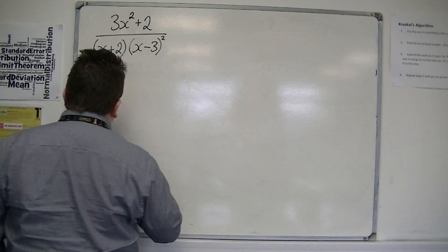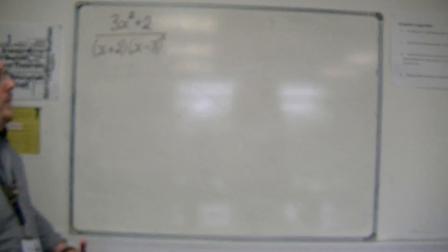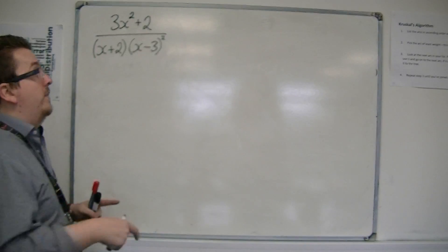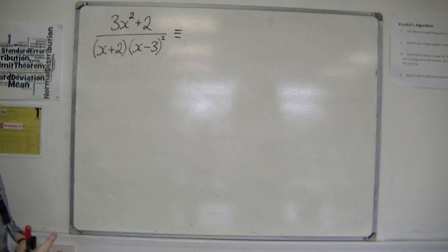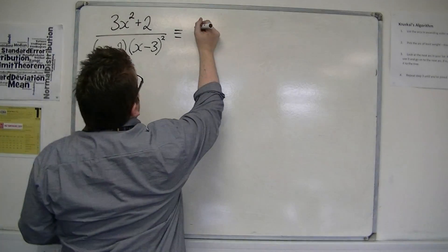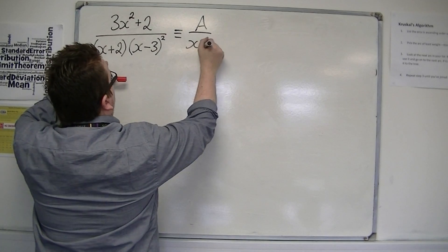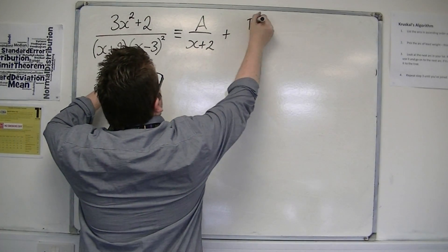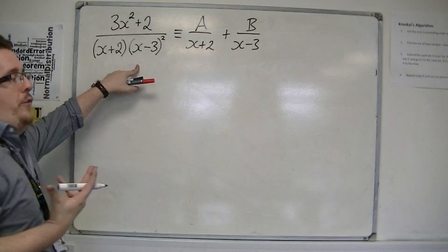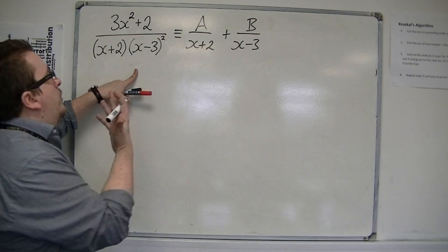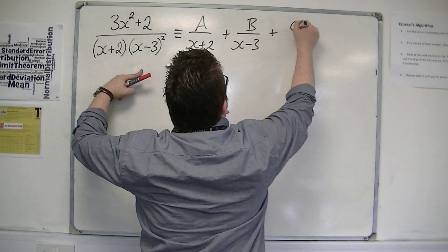And that adds an extra dimension to this problem, because in order to set it up as an equivalent expression, we must use A over x plus 2, and B over x minus 3, but we can't use C over x minus 3, we've got to use C over x minus 3 squared.